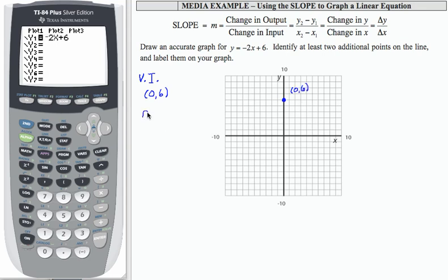Then I'm going to identify my slope. My slope is the coefficient of x, which is negative 2. Slope is change in y over change in x. I can write negative 2 as negative 2 over 1.